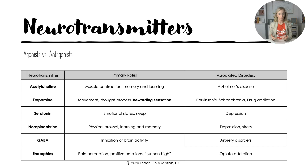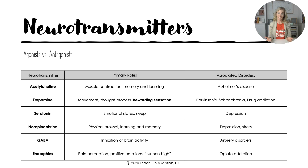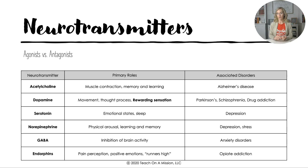Acetylcholine controls muscle contraction, is involved in memory, and is associated with Alzheimer's disease. Dopamine is the rewarding sensation — any time you eat your favorite meal you get a rush of dopamine, making you want to do it again. It's also involved in movement, thought process, Parkinson's, schizophrenia, and drug addiction. Serotonin is involved in emotional states and sleep, and an undersupply is associated with clinical depression.